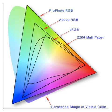HSV — hue, saturation, value — also known as HSB (hue, saturation, brightness), is often used by artists because it is often more natural to think about a color in terms of hue and saturation than in terms of additive or subtractive color components. HSV is a transformation of an RGB color space, and its components and colorimetry are relative to the RGB color space from which it was derived.